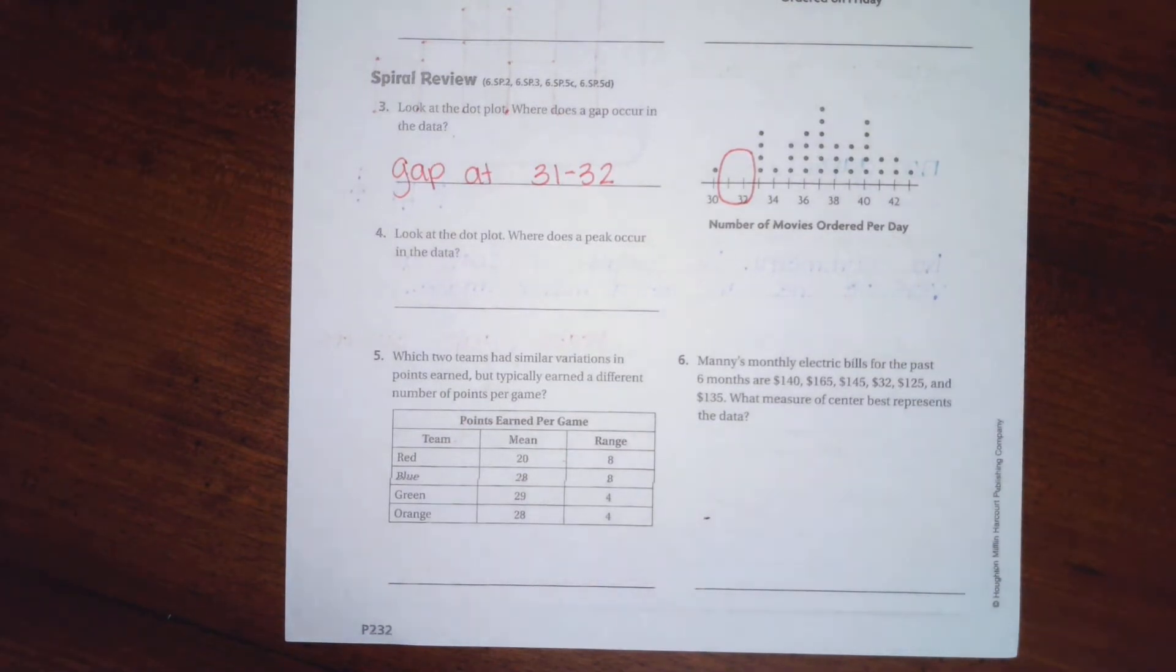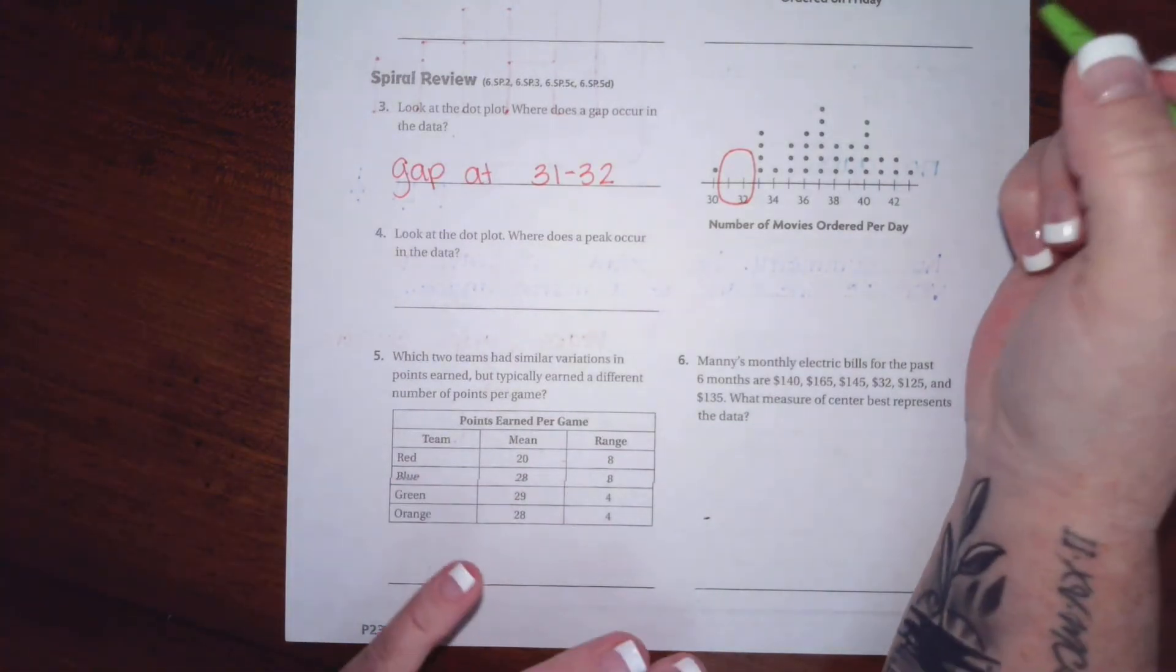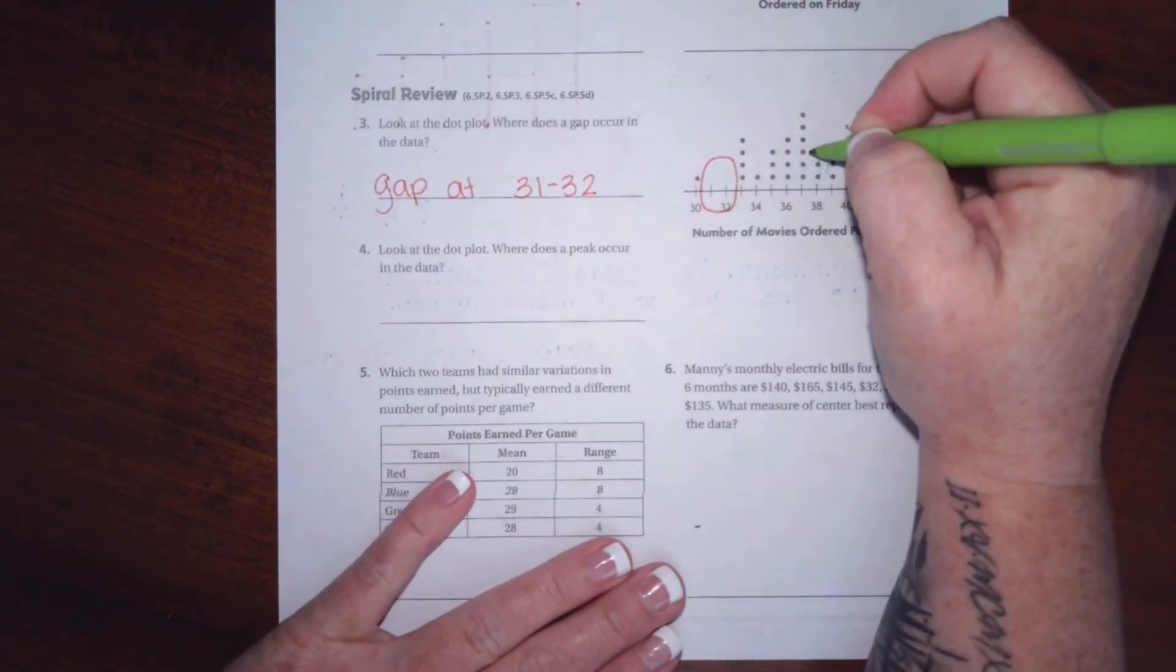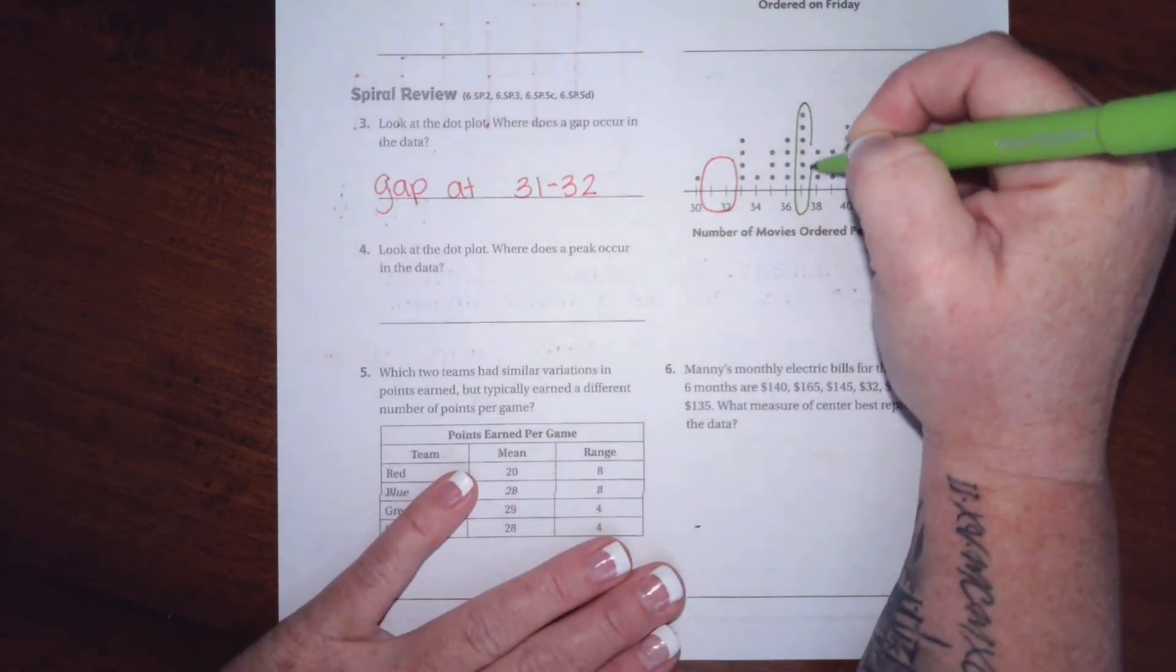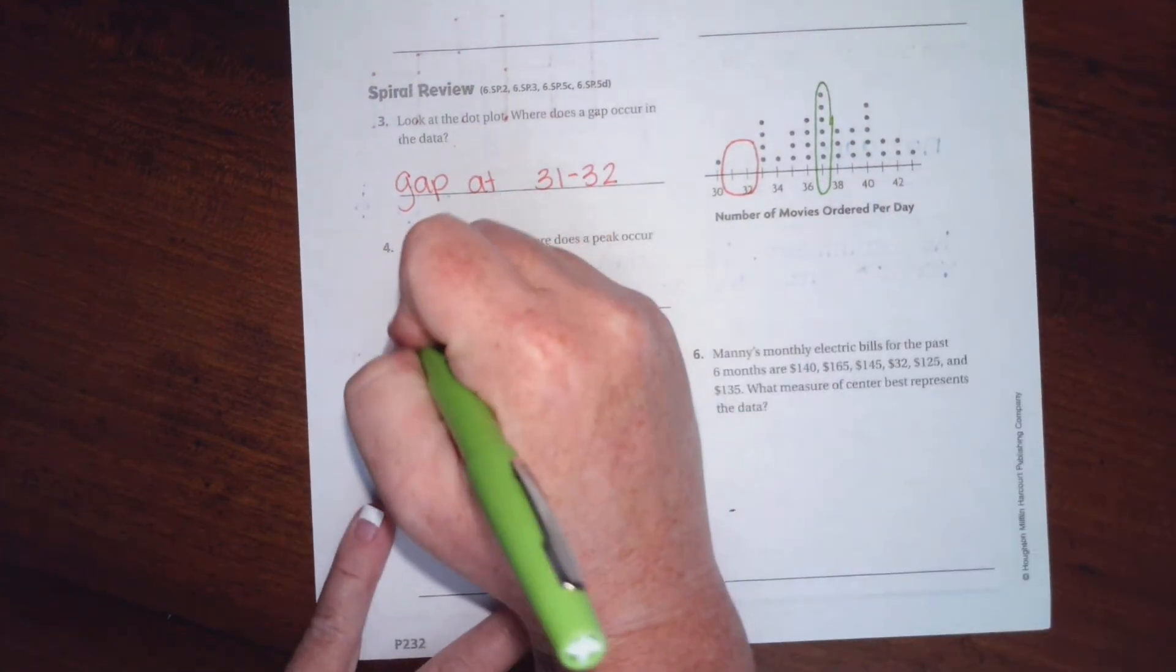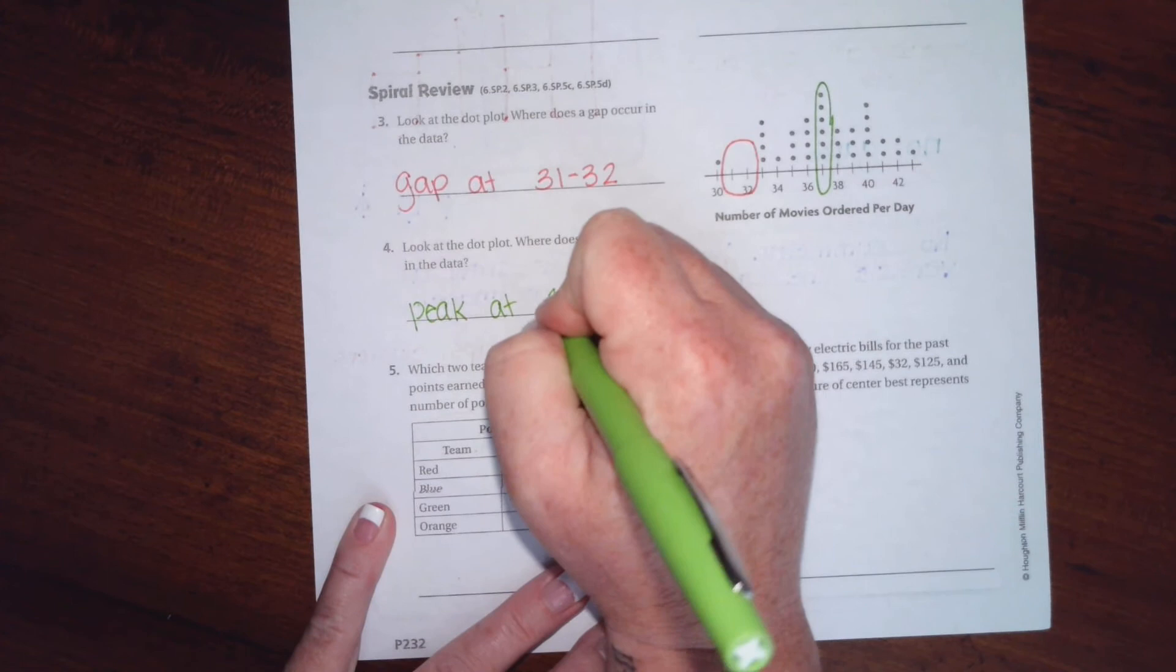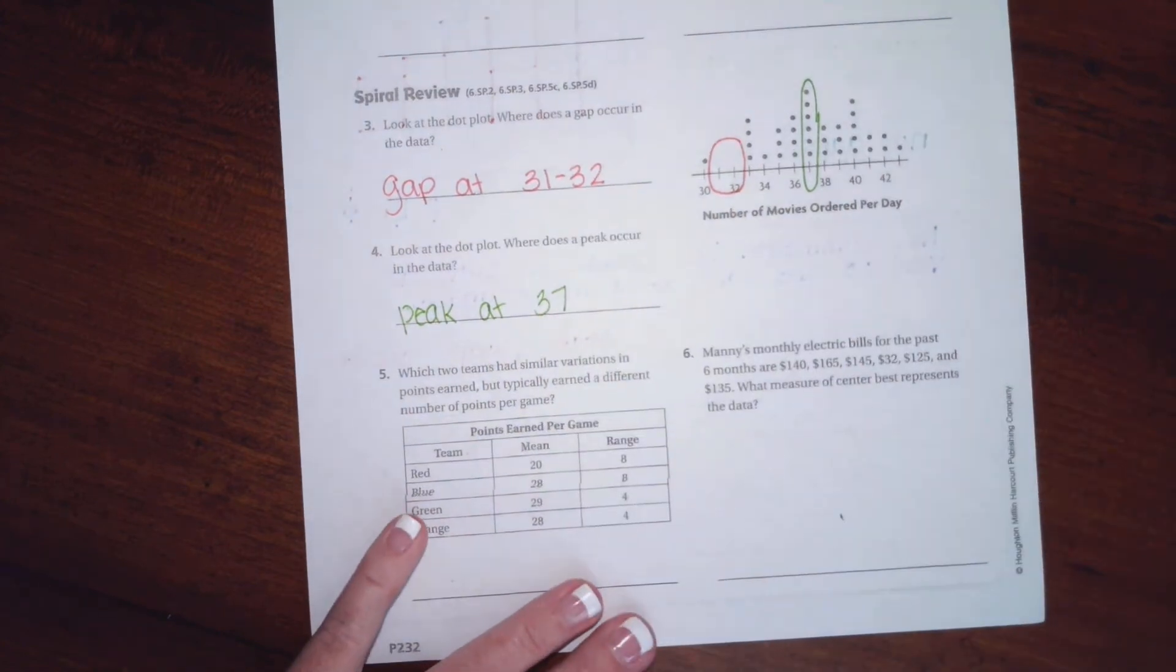Now it says to look at the dot plot and where does the peak occur. Well, while there can be more than one peak, this one's just kind of asking for one peak. So the tallest one is going to be at 37. Peak at 37.